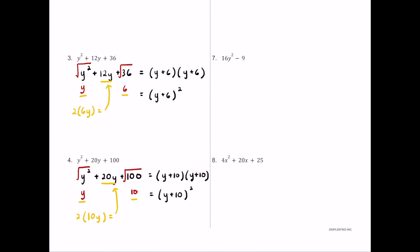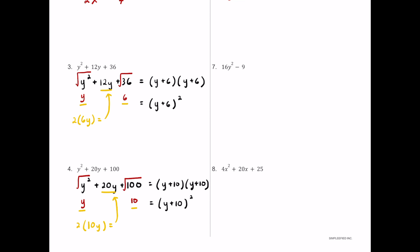For number seven we have 16y squared minus 9. This is a difference of squares once again. The square root of 16y squared is 4y and the square root of 9 is 3. Since they form a difference of perfect squares, this factors into (4y plus 3) multiplied by (4y minus 3).